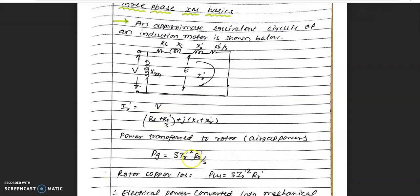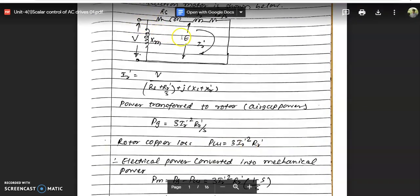The power transferred to the rotor through air gap is given by 3 × I²r × (R'r/s), which is the effective rotor circuit resistance. This is the power given from stator to rotor through air gap.